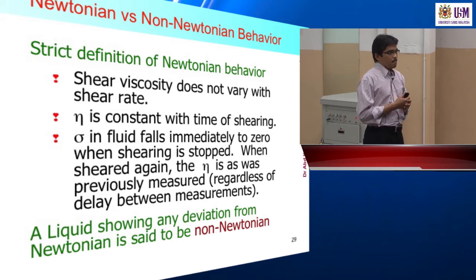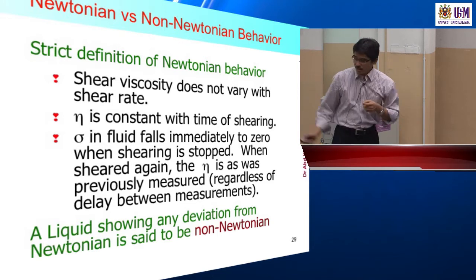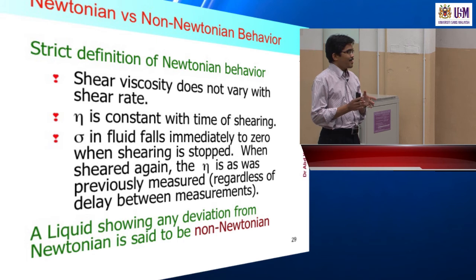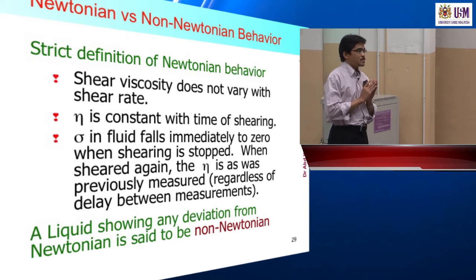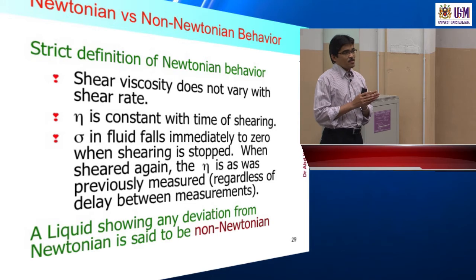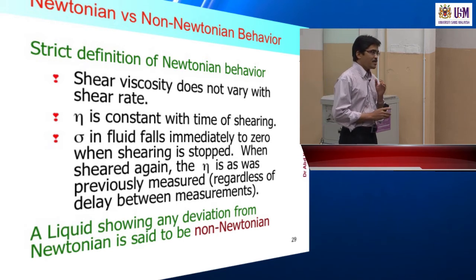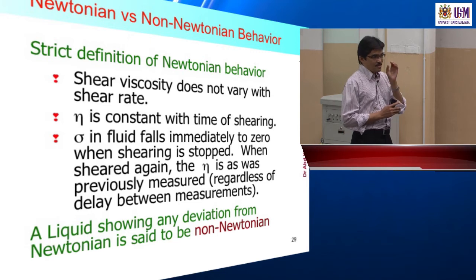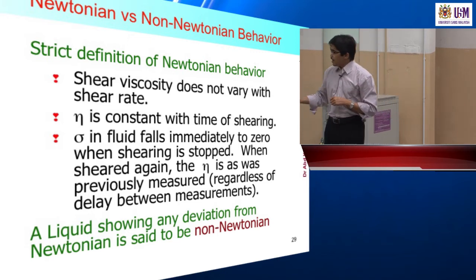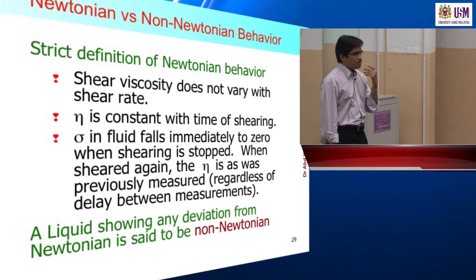Some food samples will start with a certain viscosity, but when subjected to processes at different shear rates, the viscosity will change. This is the non-Newtonian type material. If the material has Newtonian behavior, we don't worry — the viscosity would not change regardless of the shear rate. But if the material has a non-Newtonian type behavior — like pseudo-plastic or shear thinning — then we need to understand more about the different shear rates the product will be subjected to.